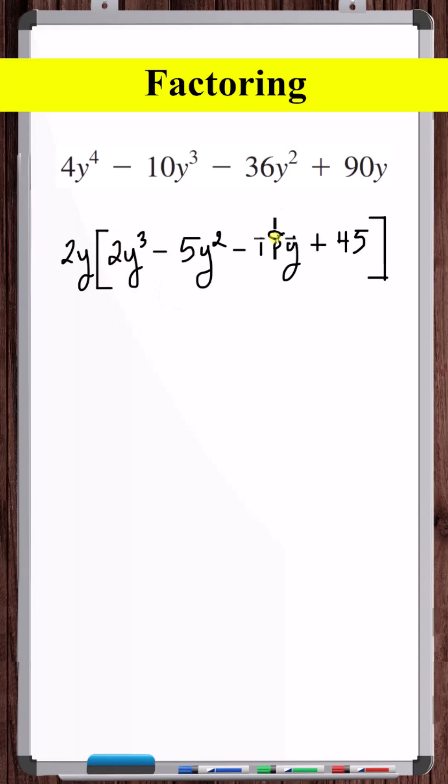So let's group the 2y cubed and the 18y together and the 5y squared and the 45 together. Now let's factor out a 2y from these two terms and a negative 5 from these two terms.